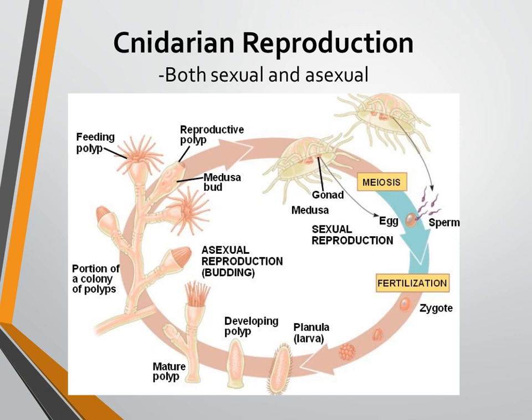Just like with sponges, Cnidarians can reproduce both sexually and asexually. Just like in sponges, asexual reproduction is going to be found in the form of budding — they're going to be able to bud and reproduce asexually that way. Sexual reproduction is going to also be quite similar to sponges, where the females have eggs, and the males are going to release sperm into the water in hopes that fertilization takes place.